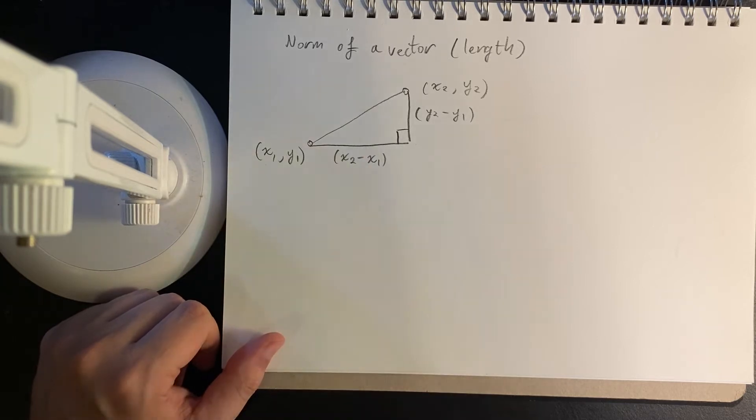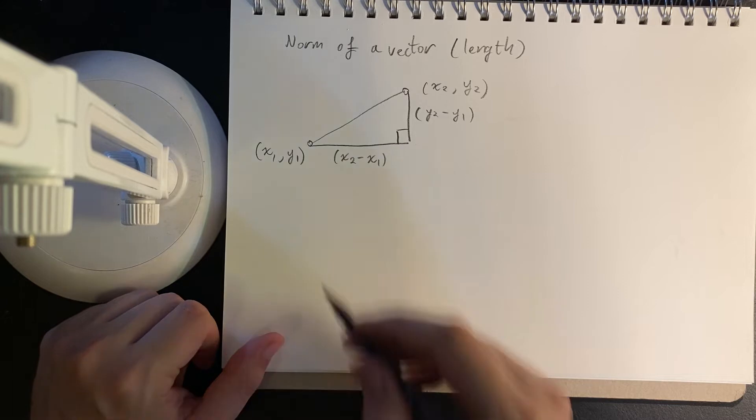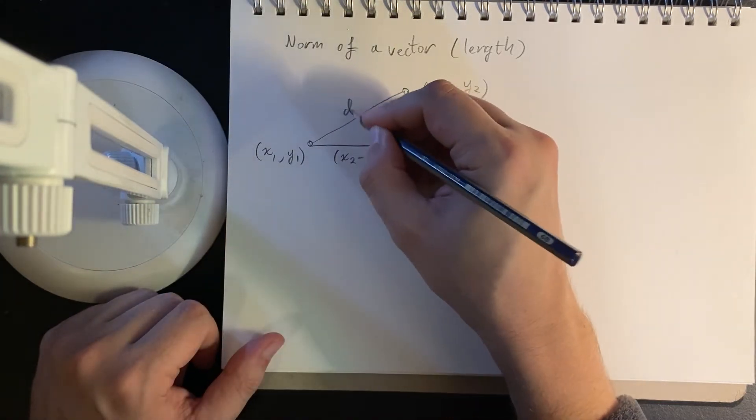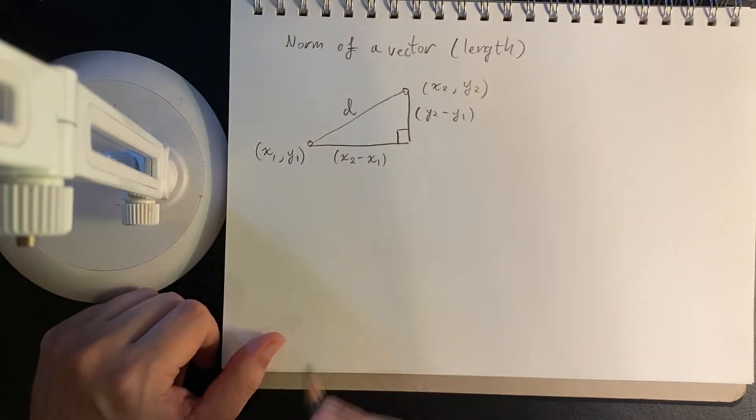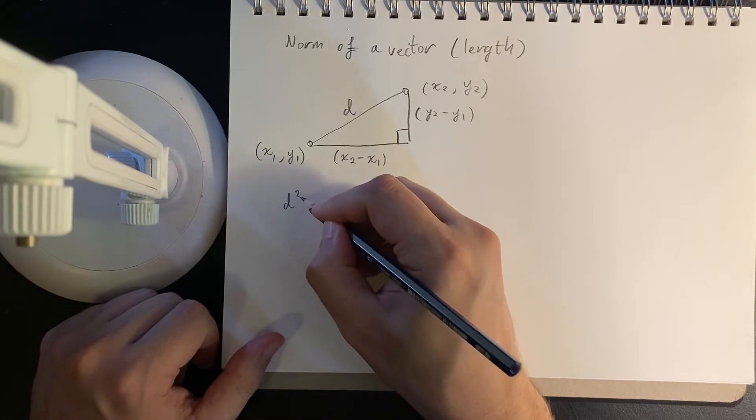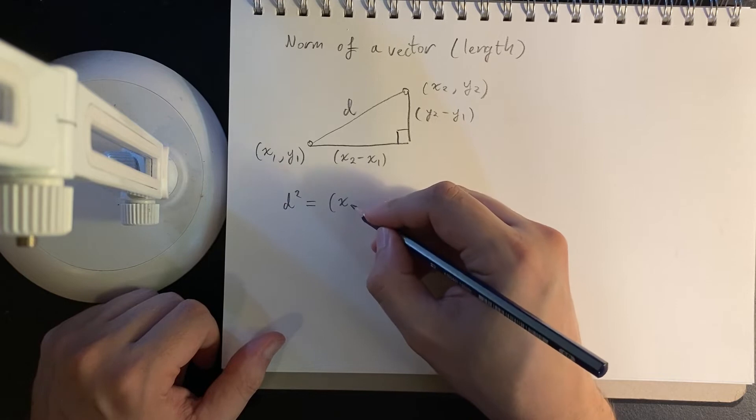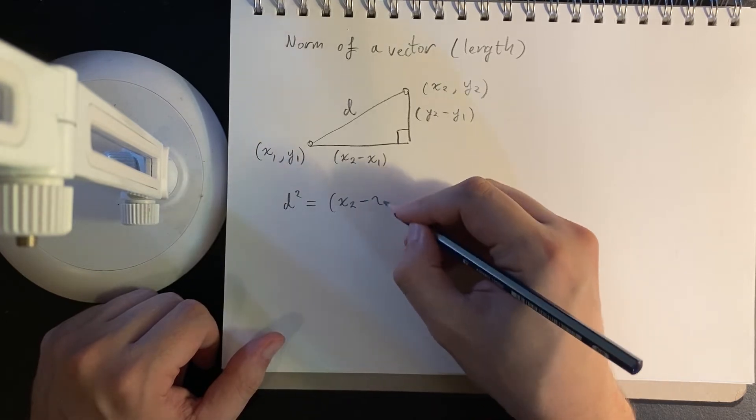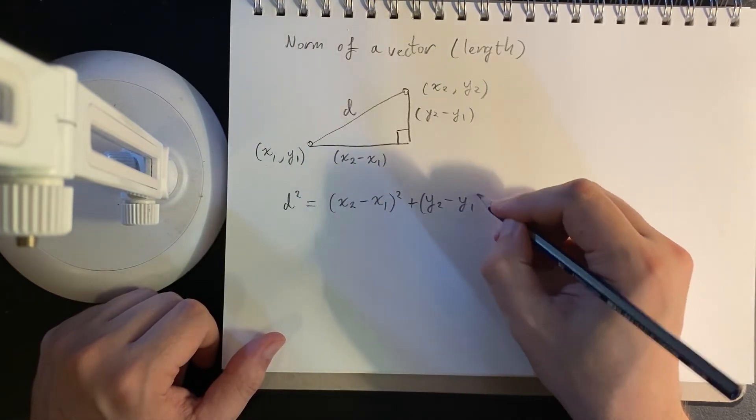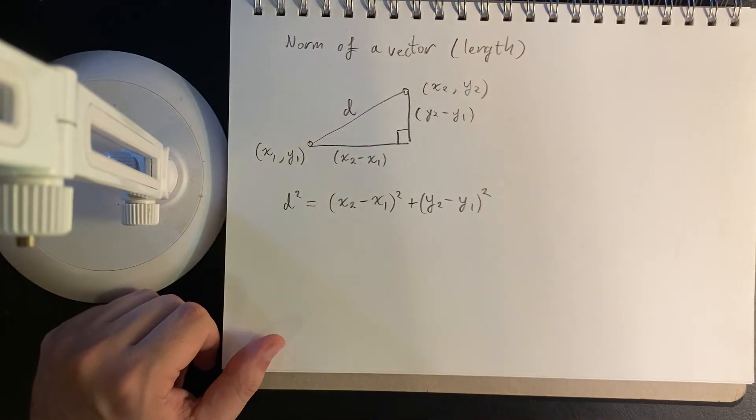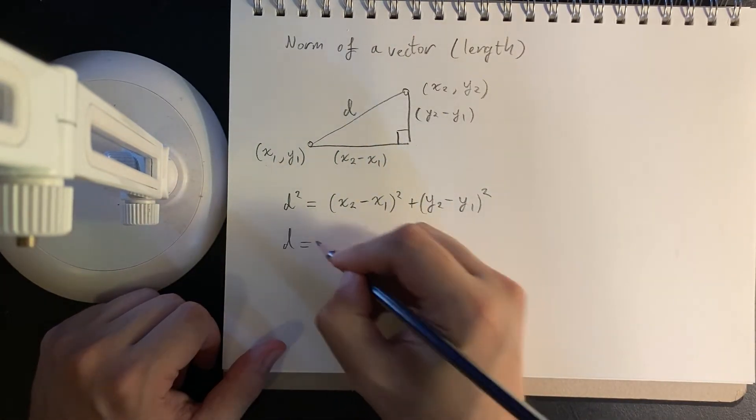But the point is we have a right-angled triangle, we can apply Pythagoras's theorem. So if this is my distance, then this d is the hypotenuse, d squared is equal to the horizontal squared plus the vertical squared.